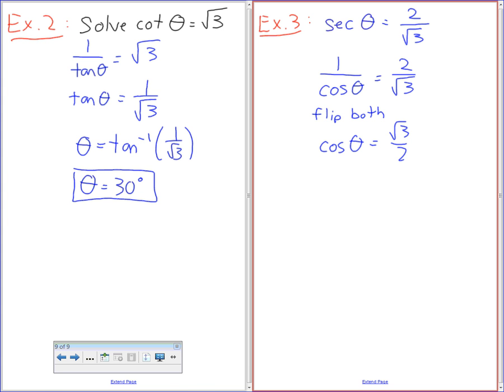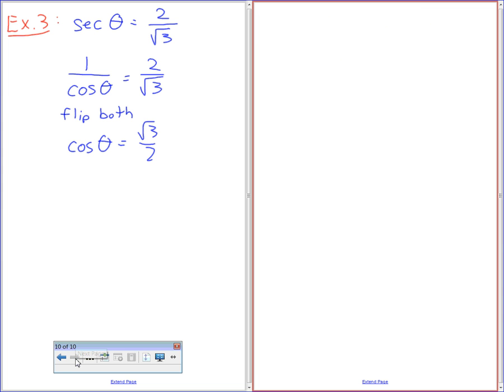So you get cos theta equals root 3 over 2. Now, if you don't like that explanation, that's easier. I'll show you the long, complicated method to it if you want to, of why that works.